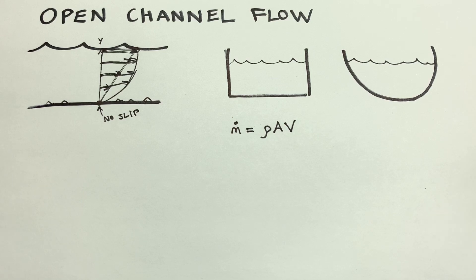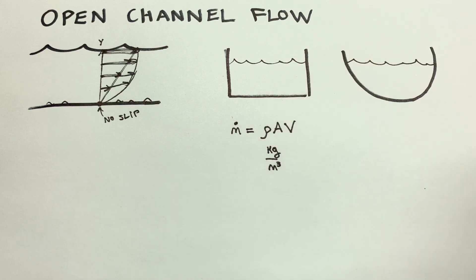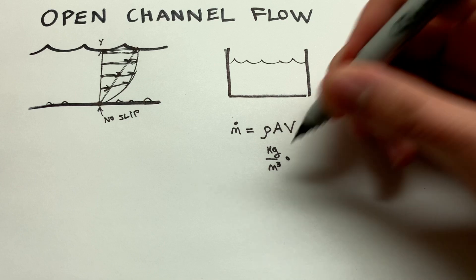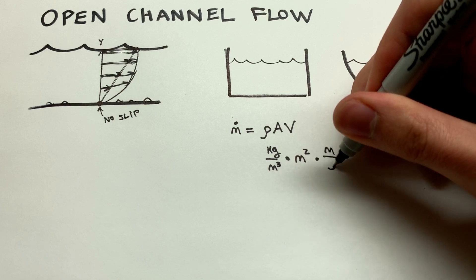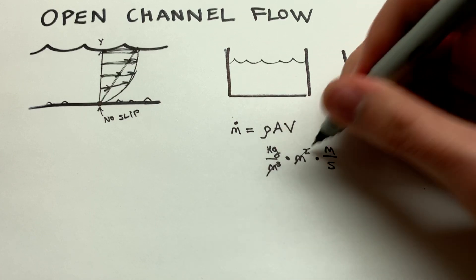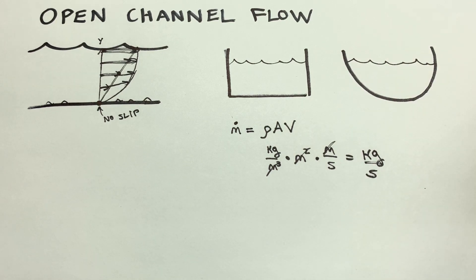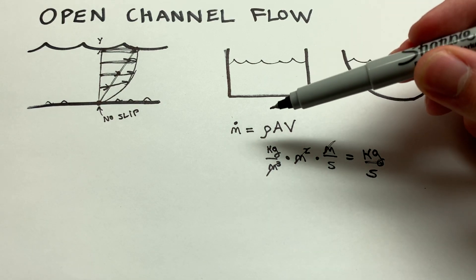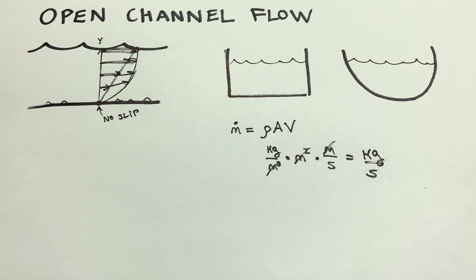the mass flow rate is equal to the density times the area times the velocity, m-dot equals rho A V. So the density, of course, that's going to be kilograms per meter cubed, using the metric system here, multiplied by the area is going to be in meters squared. And the velocity is going to be in meters per second. We can look at this meters squared times a meter, just going to give us meters cubed. So these all cancel out and we're left with kilograms per second for our final units there.